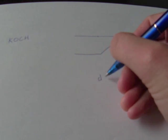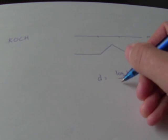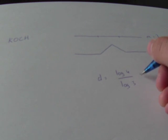This gives us a dimension d equals log 4 divided by log of 3. That's equal to 1.26.